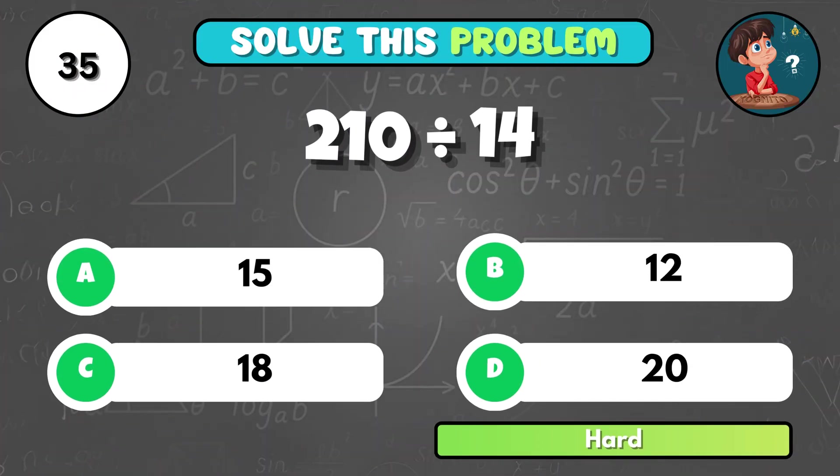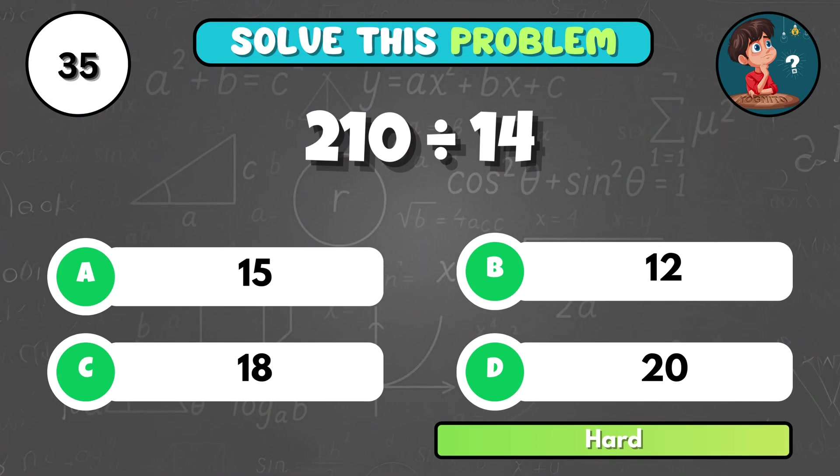What's the result of 210 divided by 14? It comes to A, 15.